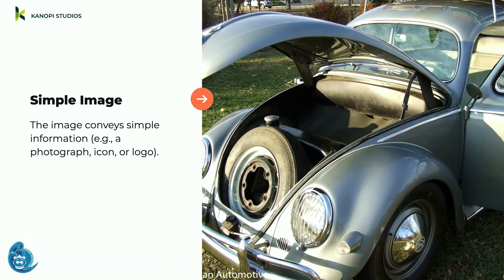A simple image — like a Volkswagen van at a bug show displaying an original tire and gas cap — needs to be described with alternative text. Even simple images need alt text. The alternative text is typically invisible to people who can see the image — it's exposed when using assistive technology like screen readers and braille displays. The description should convey the content and functionality as concisely as possible — short, sweet, succinct.